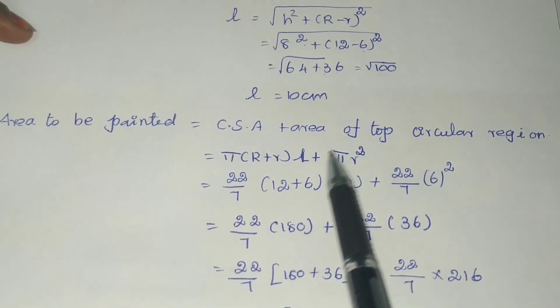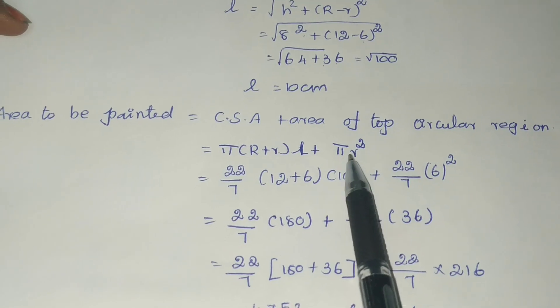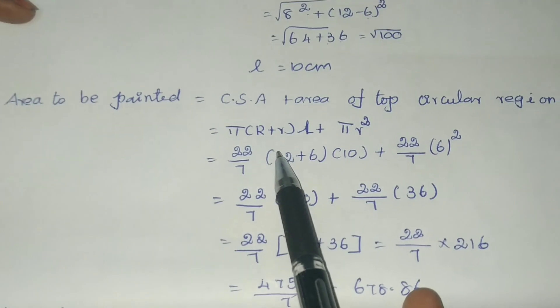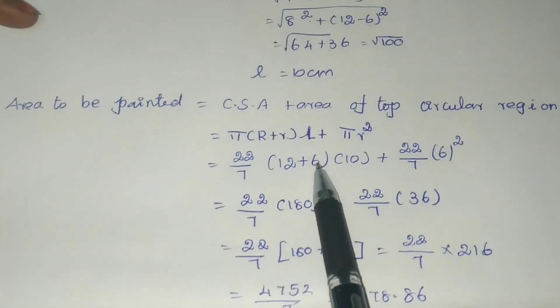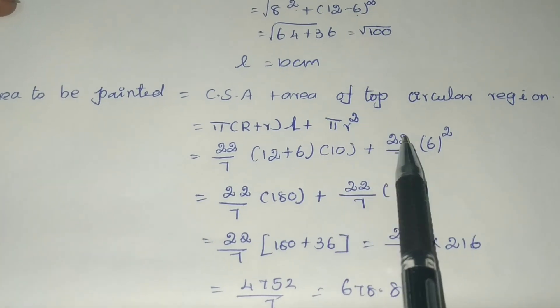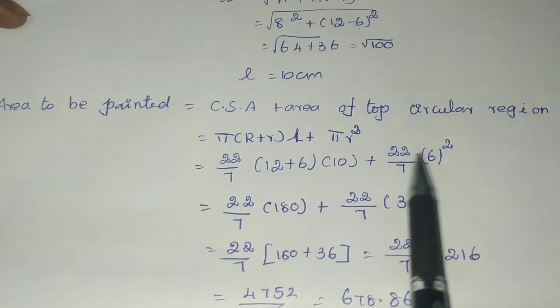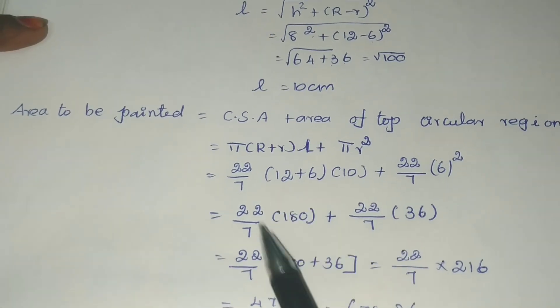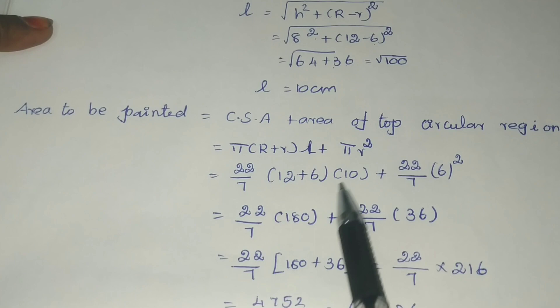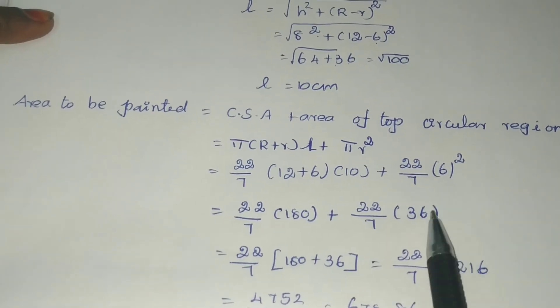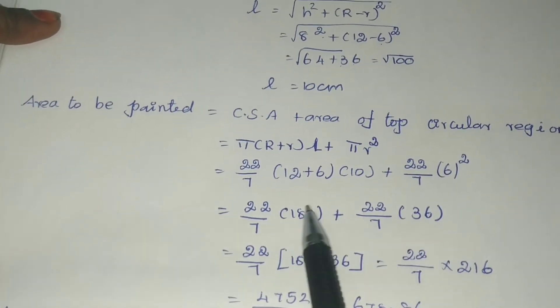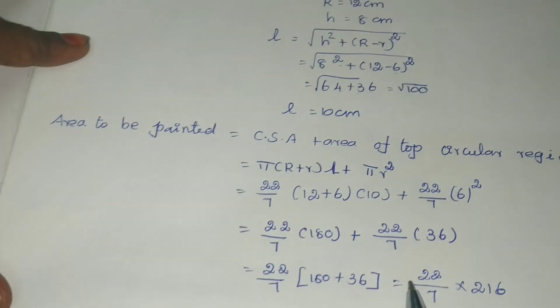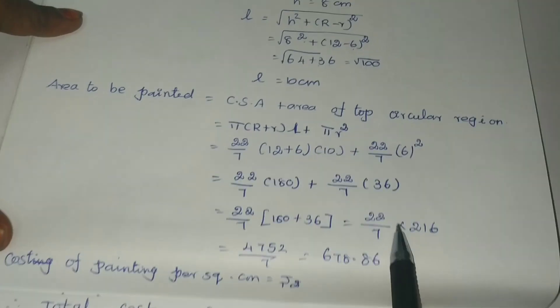Area to be painted equals curved surface area plus circular region top, which is πL(R + r) + πr². Substituting: (22/7)(12 + 6)(10) + (22/7)(6²). This equals (22/7)(18)(10) = (22/7)(180), plus (22/7)(36).